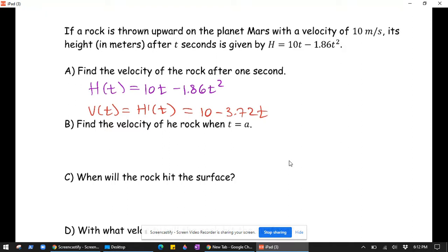Therefore, v of 1, that's what we wanted after one second, v of 1 would be 10 minus 3.72 times 1, which is 10 minus 3.72, which is 6.28.